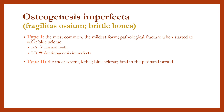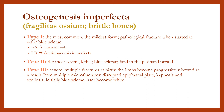Type 3 is severe, with multiple fractures at birth. The limbs become progressively bowed as a result of multiple microfractures, disrupted epiphyseal plate, kyphosis, and scoliosis. Initially there is blue sclera, which later becomes white. Type 4 is similar to type 1B but with normal sclera.